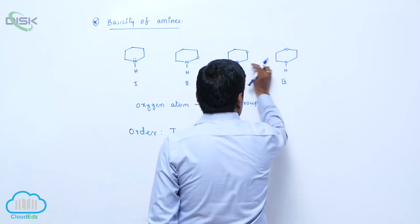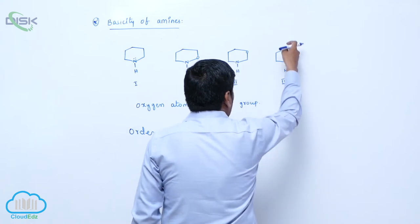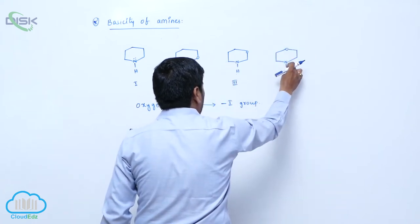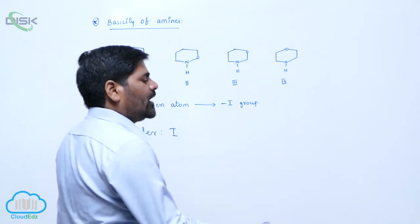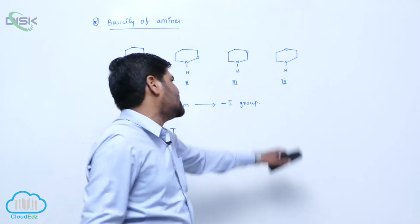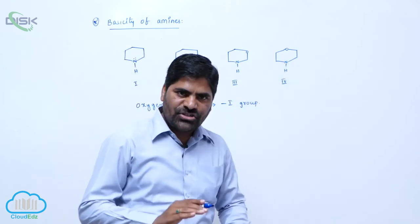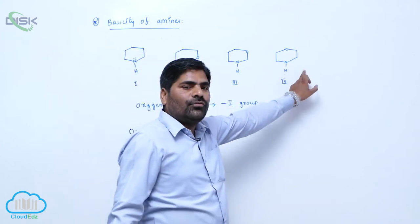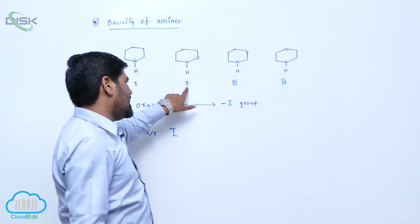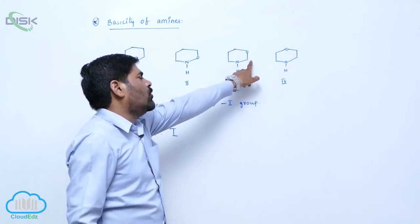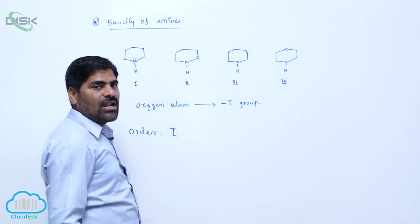Nitrogen and Oxygen are separated by one carbon in the third compound, and by two carbons in the fourth. When the distance between the more electronegative Oxygen and Nitrogen increases, the inductive effect decreases. When the inductive effect decreases, the Nitrogen lone pair of electrons is more easily available for donation. That is why the fourth compound is more basic than the third and second. Between the second and third, the third is more basic because the distance between Nitrogen and Oxygen is greater, whereas in the second it is less — so the Nitrogen lone pair electrons are more withdrawn toward Oxygen, decreasing donation capacity.